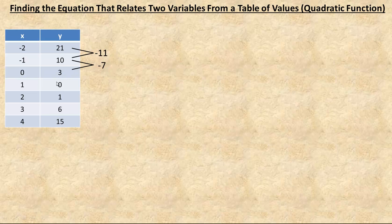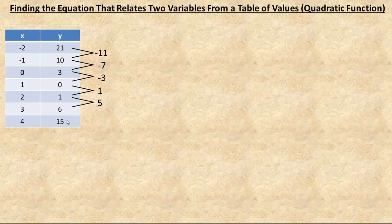3 down to 0, it's gone down 3, so again make sure the negative's there. 0 to 1 has gone up 1, so a positive 1 first difference. 1 to 6 has gone up 5, and 6 to 15 has gone up 9. Now the first differences are all different here, so it's not a linear function.